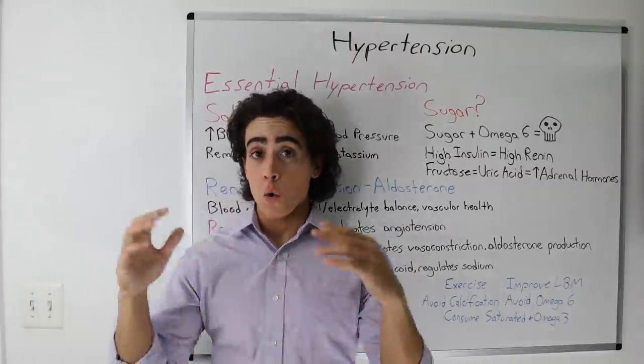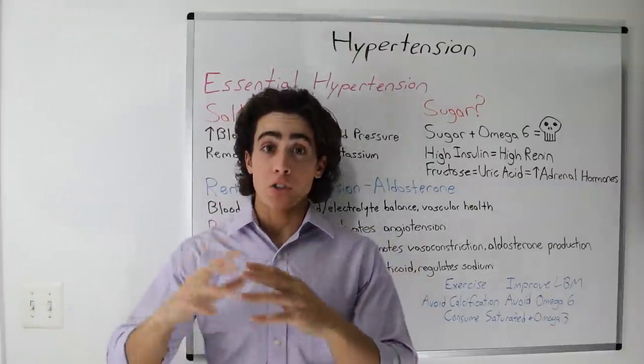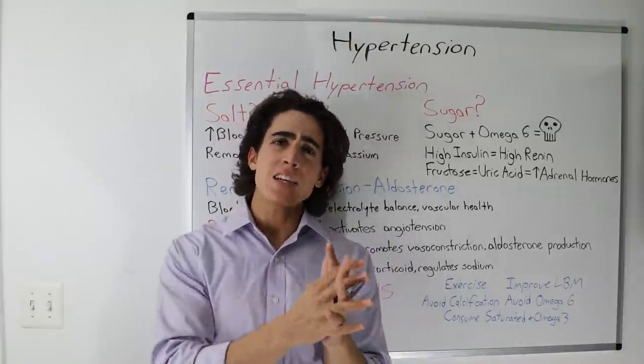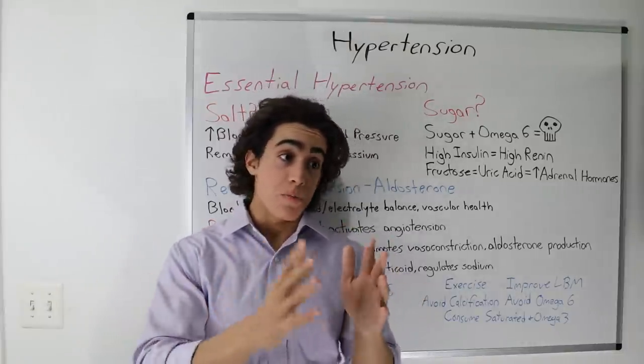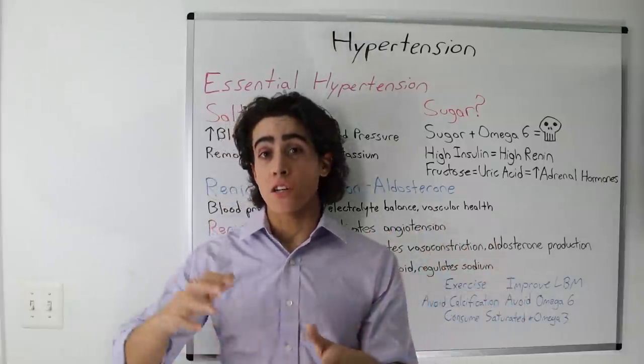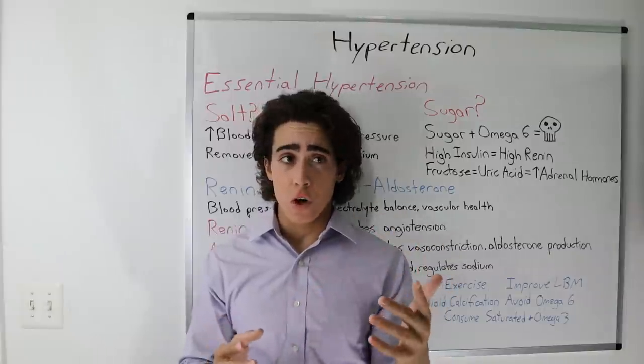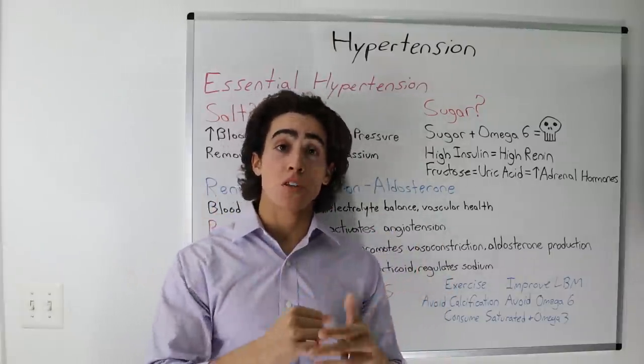Overproduction of other adrenal hormones causes high blood pressure as well. Cortisol, epinephrine, norepinephrine, each of these have different mechanisms that can cause high blood pressure individually, sometimes referred to as Cushing's syndrome, specifically when you have too much cortisol.